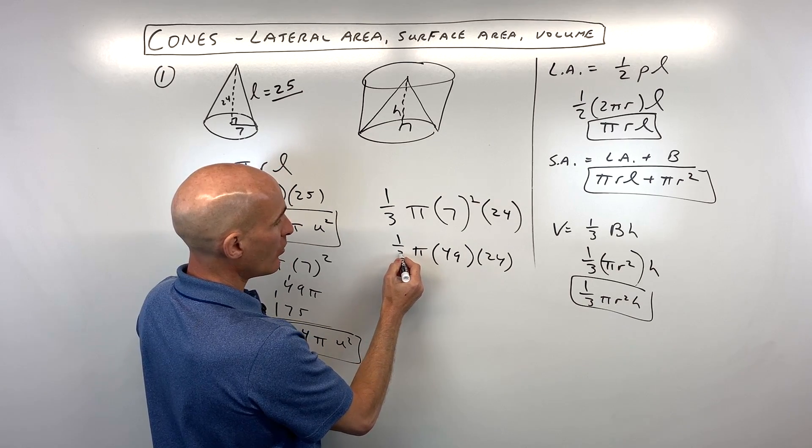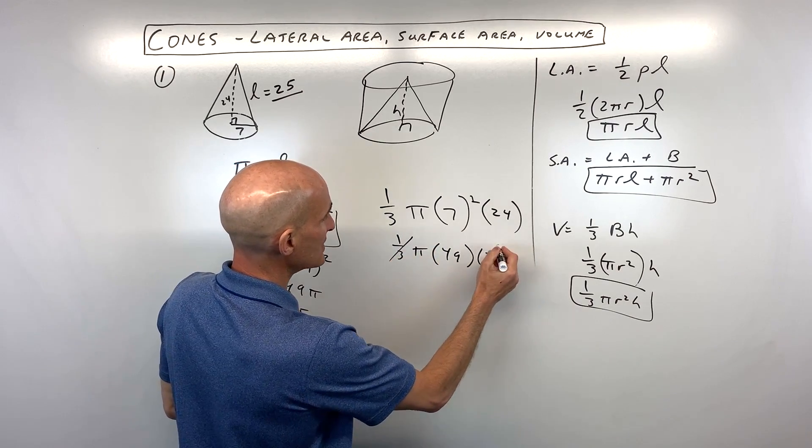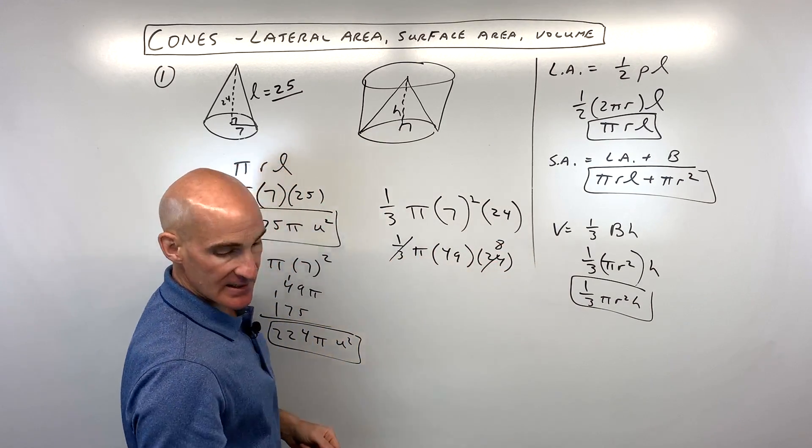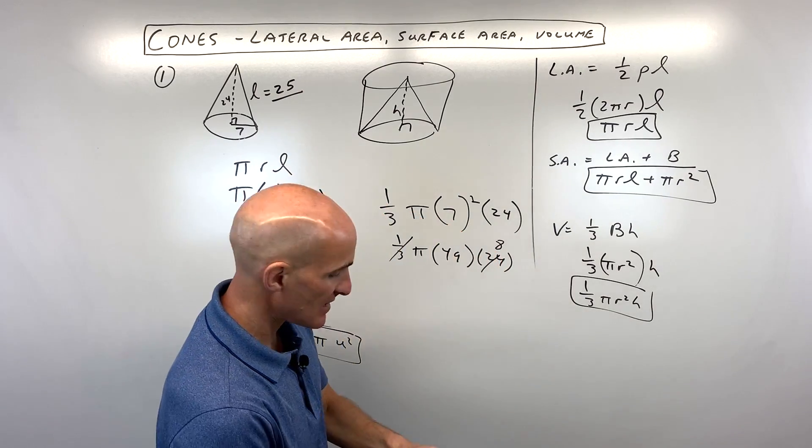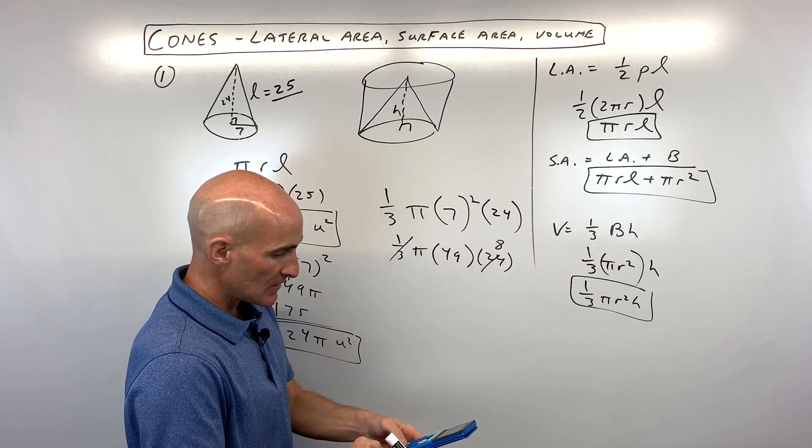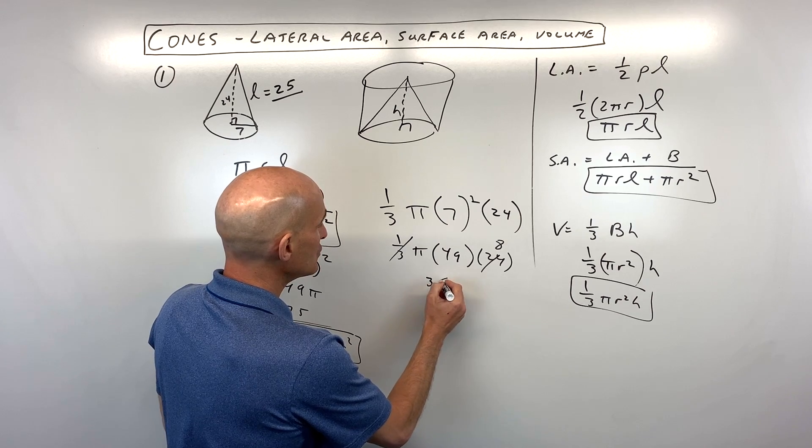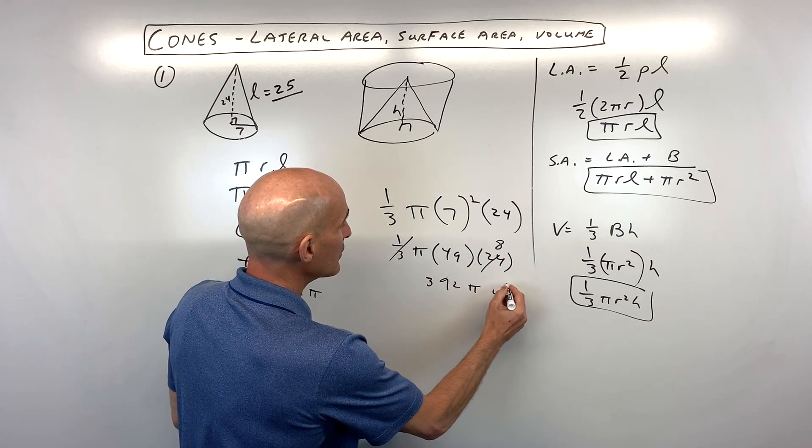7 squared is 49 times 24. Well, one-third times 24, that's going to reduce to 8. And 49 times 8, let's see what that comes out to. It's 392π units cubed.